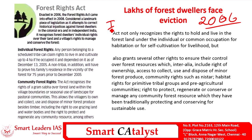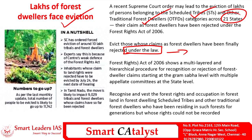The Forest Rights Act recognizes the rights of forest dwellers, classified into two groups: individual rights and community rights. Under individual rights, a Scheduled Tribe can claim the right to continue living in the forest and depend on forest produce for their livelihood. Under community rights, the Act recognizes the Gram Sabha as the nodal agency and gives the community the right to collect, use, and dispose of minor forest produce, use forest land for grazing, and use water bodies in a sustainable manner.